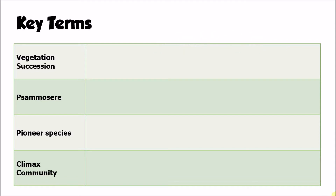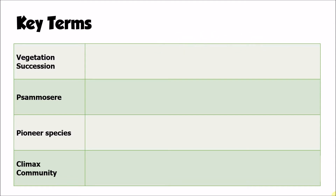Okay, so if we go through these key terms then. Vegetation succession — this is the evolution or the development of plant communities at a site over time. So how the vegetation changes over time from what we call a pioneer species to a climax community.